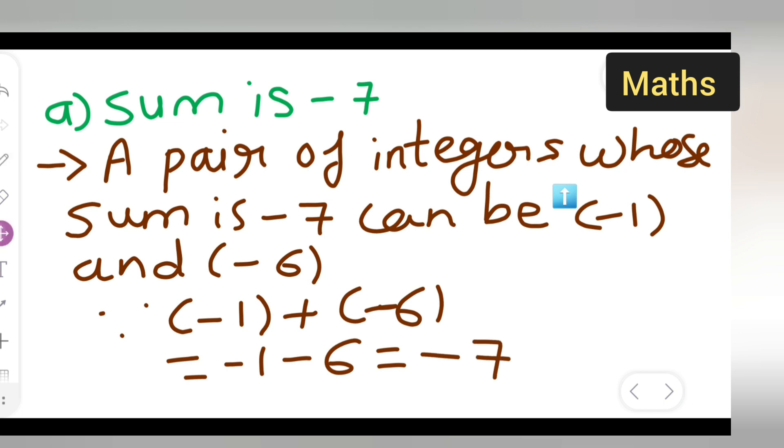So obviously, the sum of minus 7 can be minus 1 and minus 6. I hope you have understood, and thanks for watching.